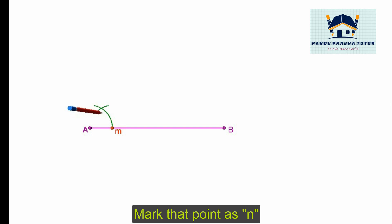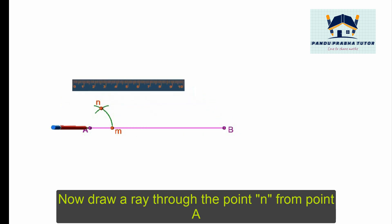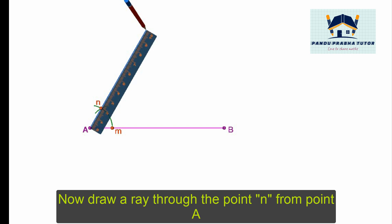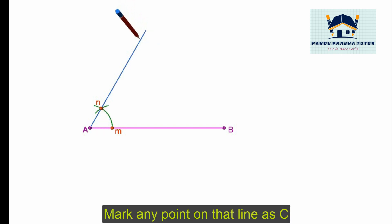Now mark this point. Draw a line from A passing through this intersection. Now call this line as C.